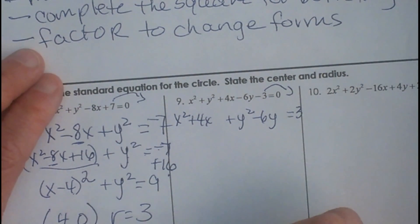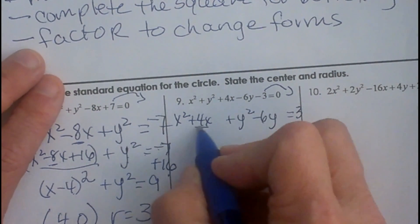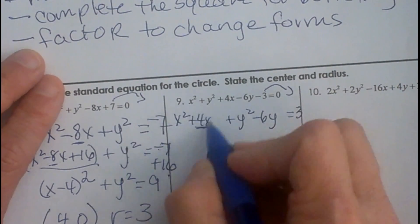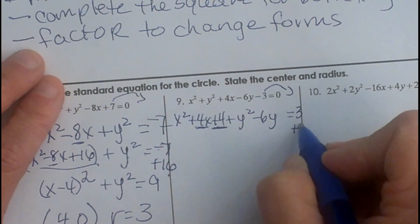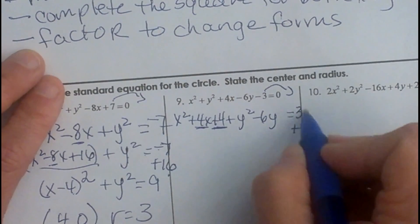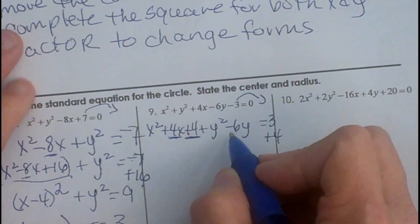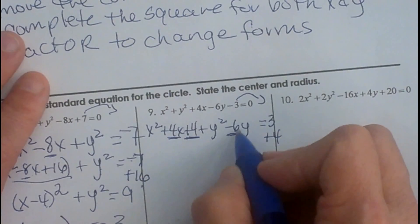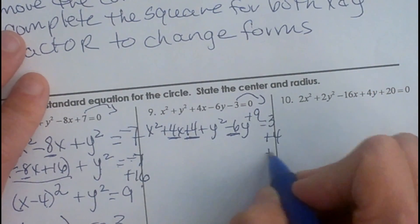Now we have to complete the square so I am going to take this 4 which is the coefficient to the linear term for x and I am going to half it and square it. So I am going to add 4 right here. But if I add 4 to the left I have to add it to the right so I am going to add a 4 here. And now let's complete the square again this time for the y. This time we have a linear term so 6, half of 6 is 3 and 3 squared is 9 so I am going to add 9 to both sides.